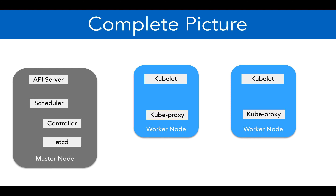The API server exposes the API - we write all kubectl commands and send them to the API server. The scheduler checks which worker node is available and based on that it schedules pods. The controller is the one which launches things like replica sets, daemon sets, deployments, services, etc., which we'll see in future sections. And etcd stores the metadata of the entire cluster.